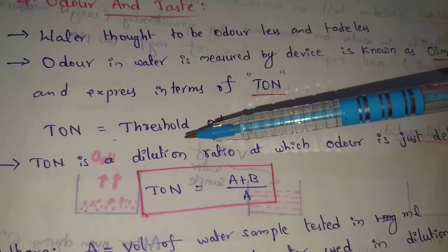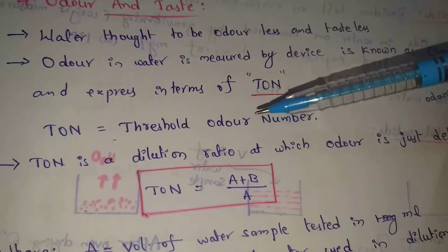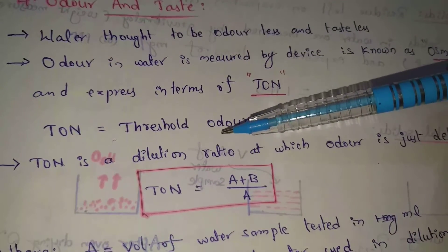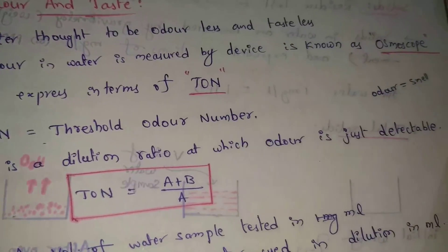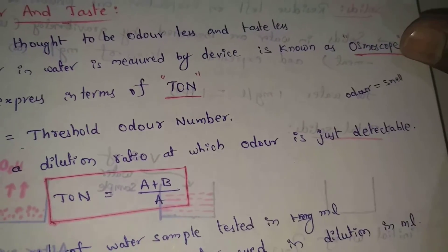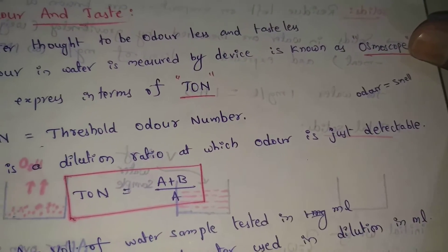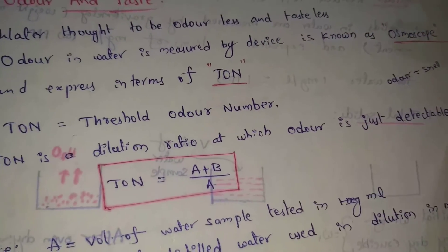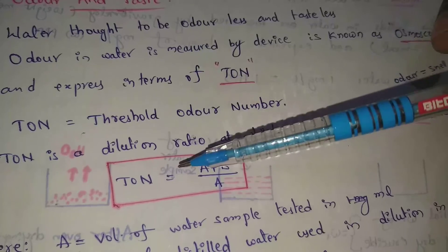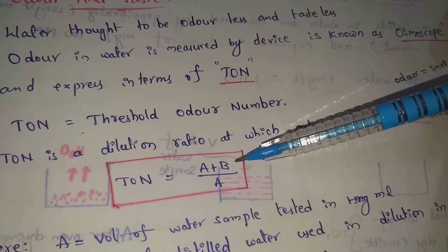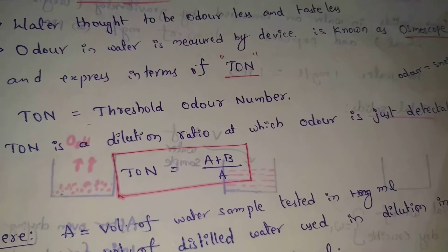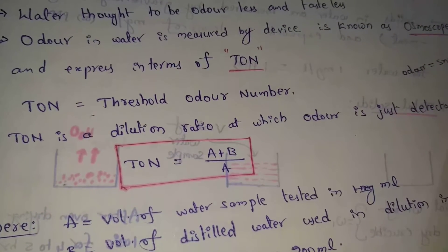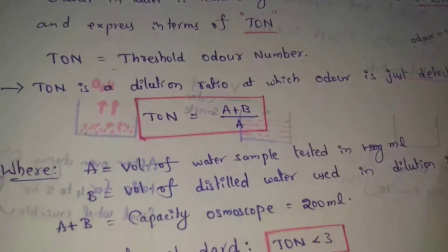TON is the dilution ratio at which odor is just detectable. The formula is: TON equals a plus b divided by a, where a and b are measured volumes.